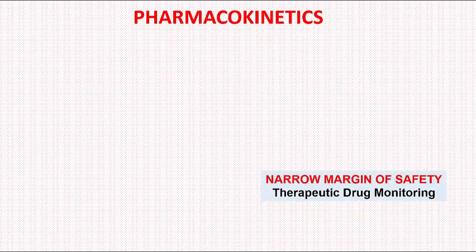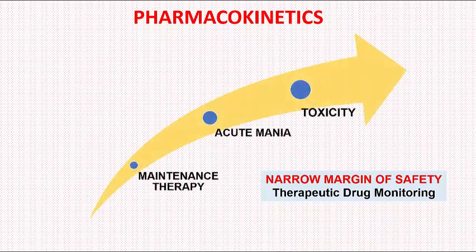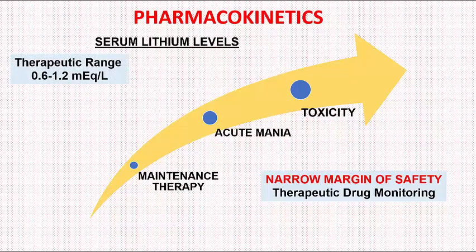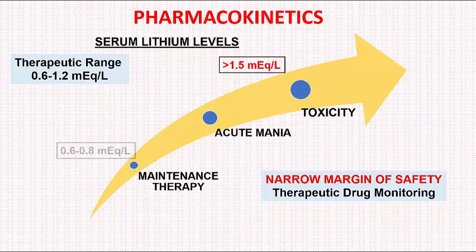Always remember that Lithium has a narrow margin of safety — there is a very narrow window between the effective doses and the doses at which it produces adverse effects. So it is a very appropriate drug for therapeutic drug monitoring. The therapeutic range of Lithium is 0.6 to 1.2 milliequivalent per liter, and toxicity appears if the plasma concentration increases to more than 1.5 milliequivalent per liter. Within the range 0.6 to 1.2, the concentration range 1 to 1.2 is preferred for acute mania, whereas 0.6 to 0.8 is considered suitable and safe for long-term maintenance therapy.